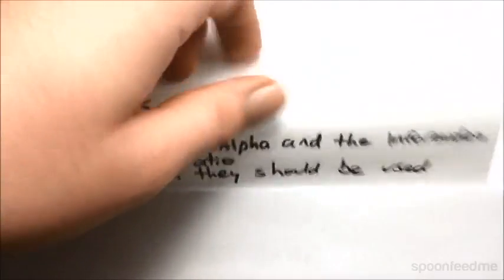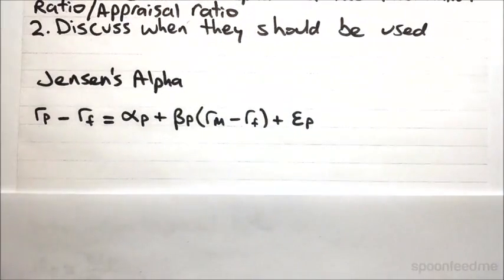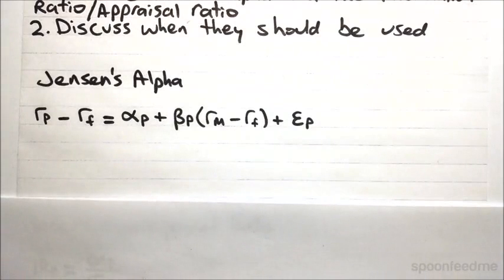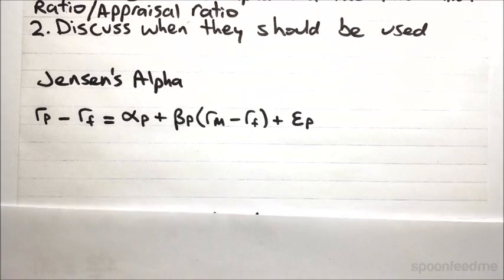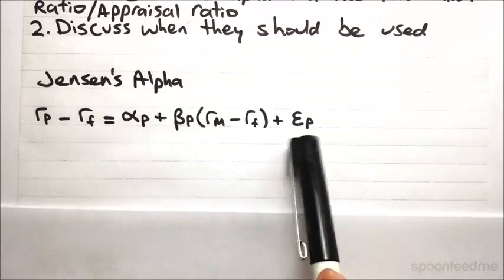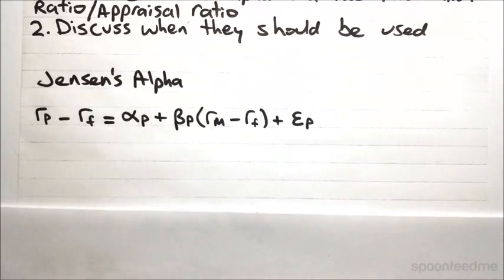So first up, Jensen's alpha. This is absolutely nothing new. When we use the single index model, we have our alpha term telling us how much expected excess return over that of the market we are going to get. And that's basically what we're talking about here. The only difference is that with our single index model, we usually have this formula pertaining to single assets, whereas now we've got an entire portfolio.